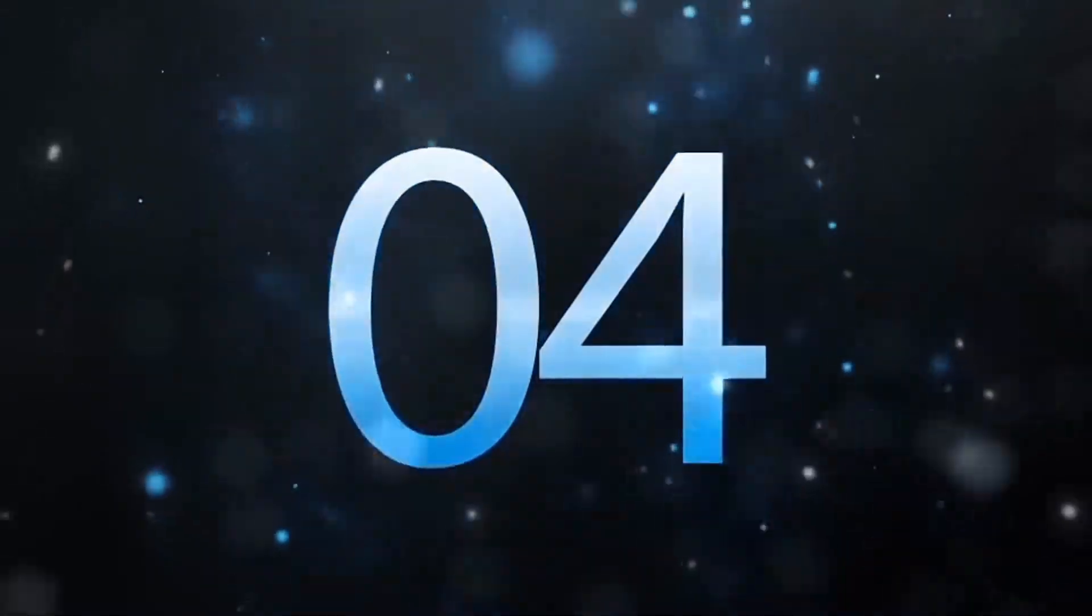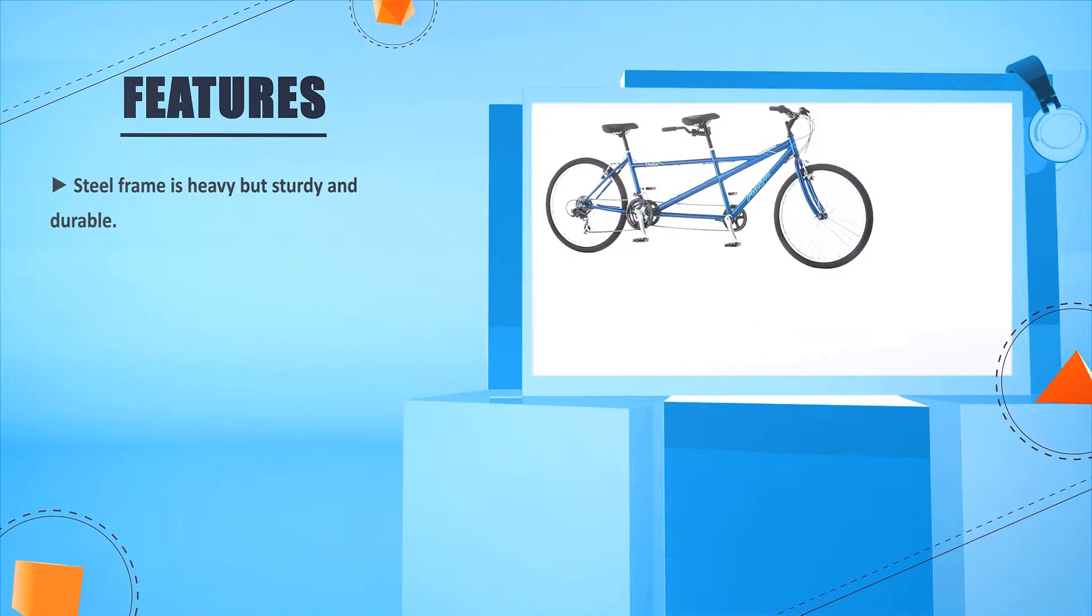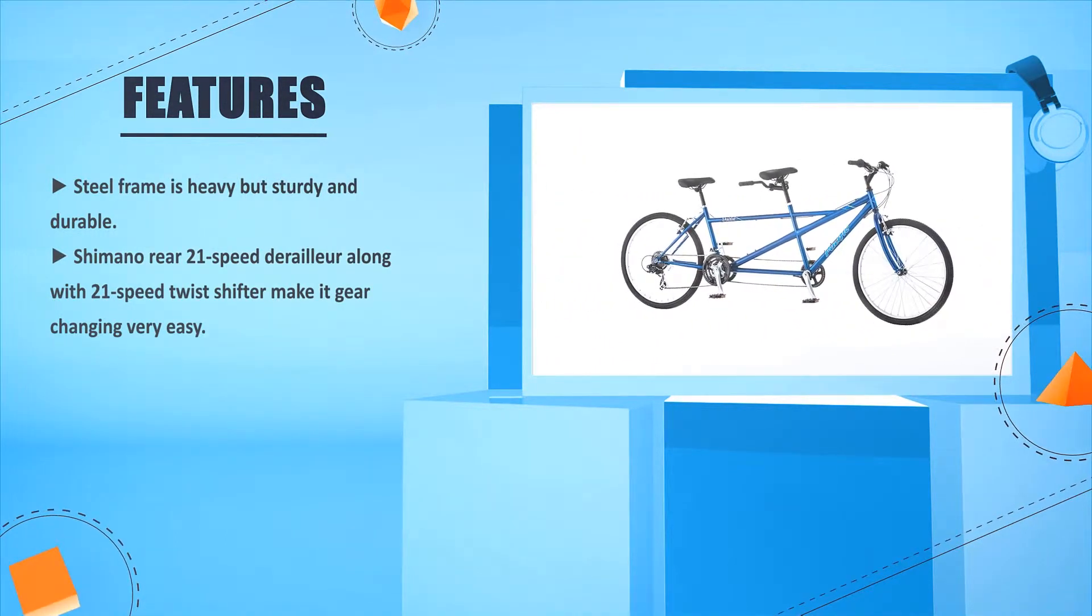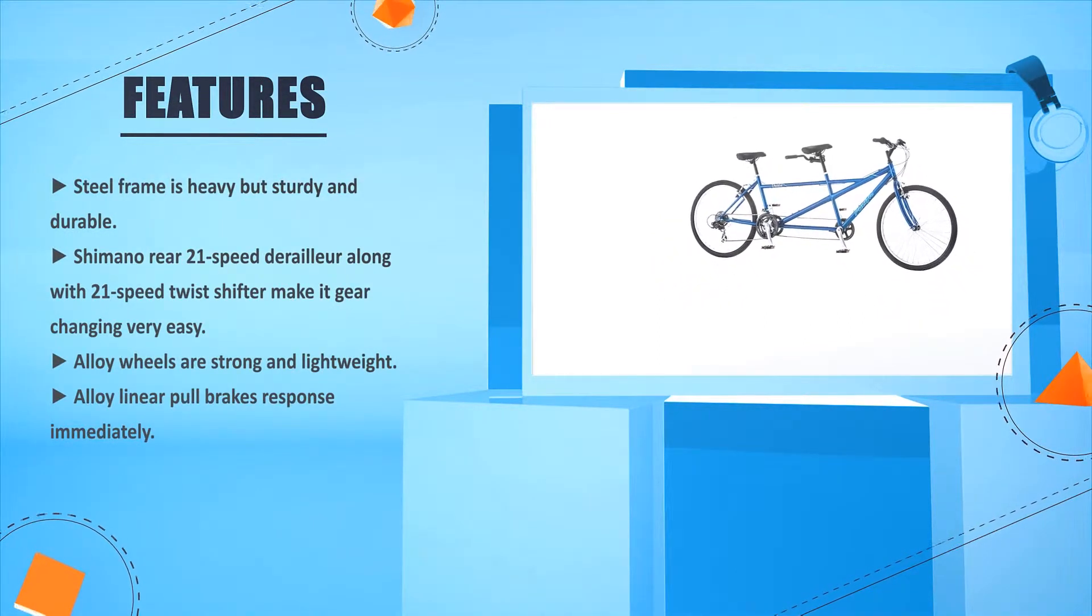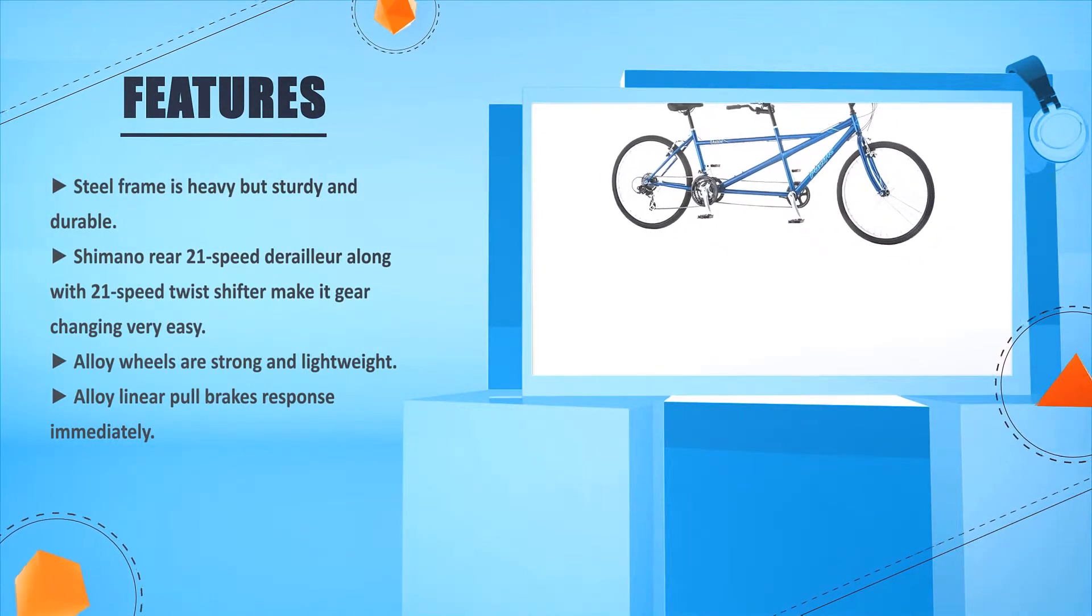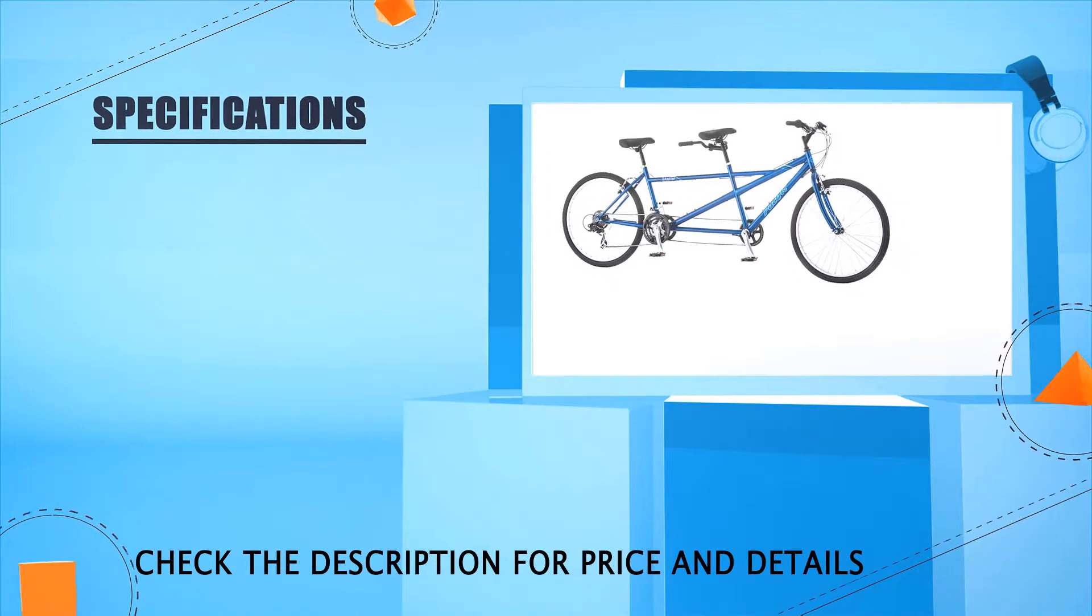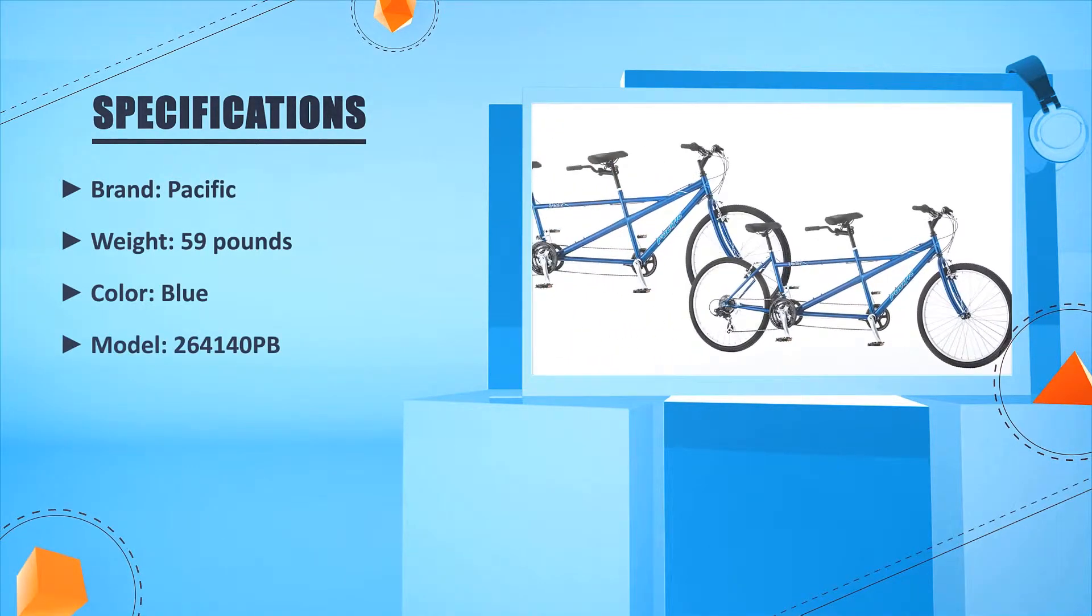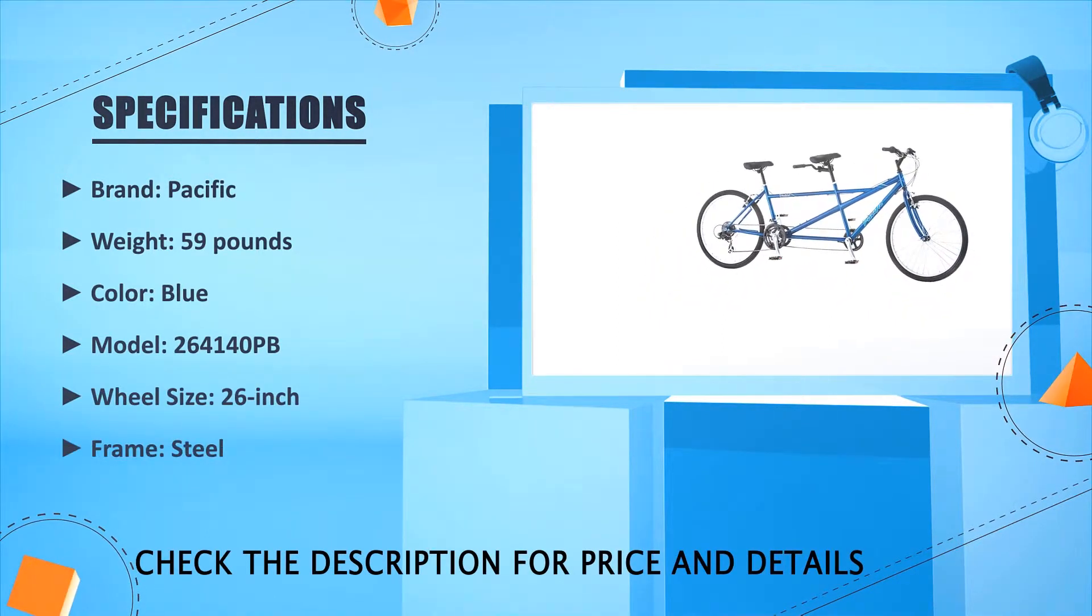Number four: Pacific Dually Tandem Bicycle. Steel frame is heavy but sturdy and durable. Shimano rear 21-speed derailleur along with 21-speed twist shift to make gear changing very easy. Alloy wheels are strong and lightweight. Alloy linear pull brakes respond immediately. Brand: Pacific, Weight: 59 pounds, Color: Blue, Model: 264140PB, Wheel size: 26 inch, Frame: Steel.